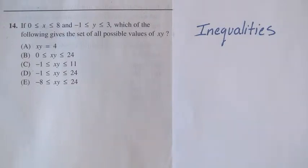Question 14 reads, if 0 is less than or equal to x is less than or equal to 8, and negative 1 is less than or equal to y is less than or equal to 3, which of the following gives a set of all possible values of x times y?